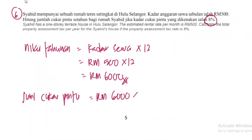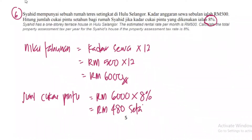RM6,000 didarabkan dengan 8% — dia kena bayar RM480 setahun. Settle. Settle untuk hari ni — kita bincang 6 soalan.